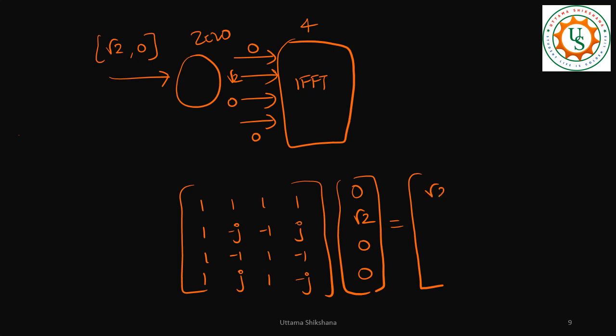So output is √2. Let us take a normalization factor also into picture. I will turn it here now, √2, then -j√2...